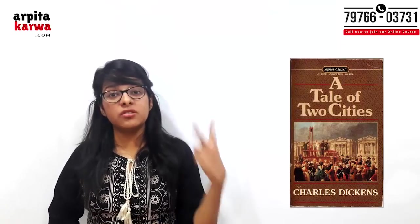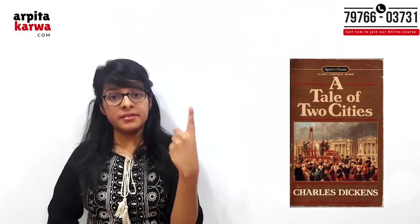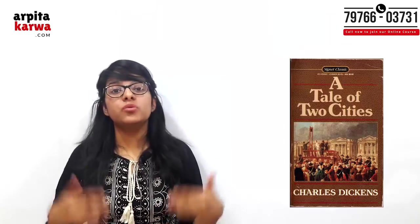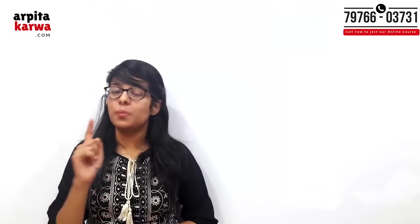The first important Victorian novelist is Charles Dickens. From all his novels, three are most important for UGC NET. The first is Tale of Two Cities. As the title suggests, it is based on the story of two cities — London and Paris. The story is set during the French Revolution and opens with the famous line: 'It was the best of times, it was the worst of the times.' This line has been asked several times in the NET exam.